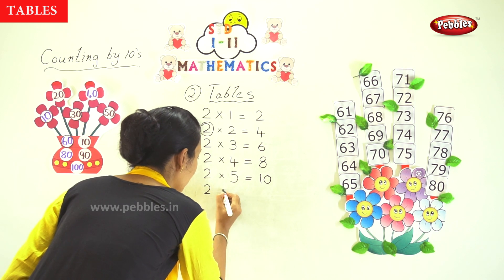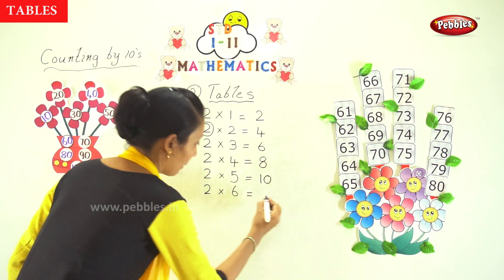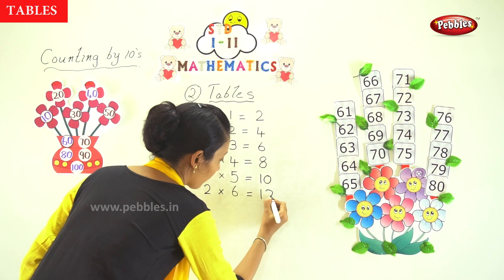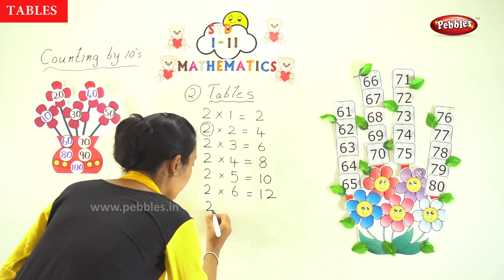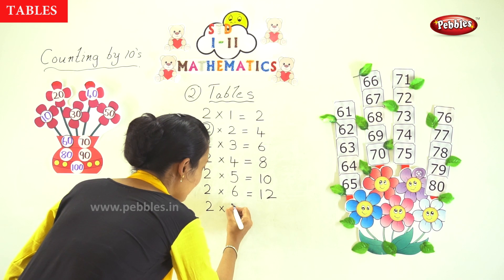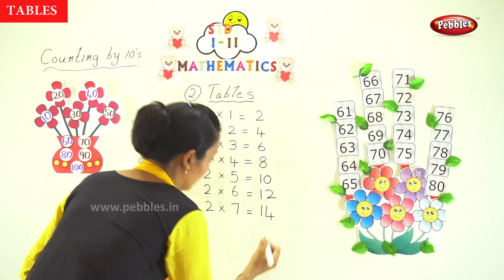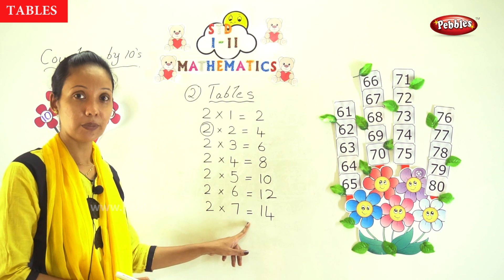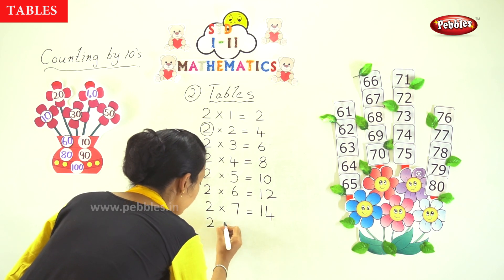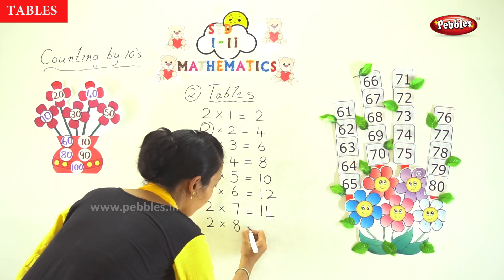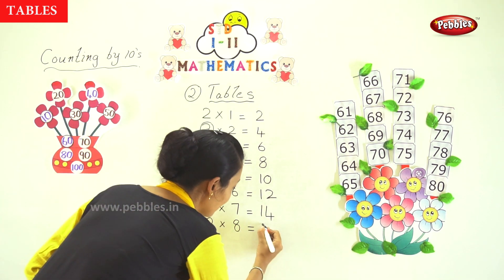Next, 2 into 6. You take 2 six times and you will get 12. Next, 2 into 7 is equal to 14. That is 2 into 8 — multiplying 2 into 8 times, you will get 16.